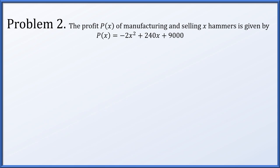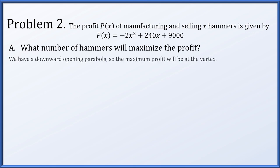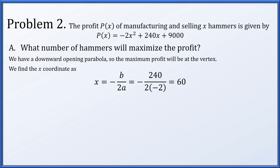Problem 2. The profit p(x) of manufacturing and selling x hammers is given by p(x) = -2x² + 240x + 9000. What number of hammers will maximize the profit? We have a downward opening parabola — a quadratic with negative leading coefficient — which achieves its maximum at the vertex. We find the x-coordinate of the vertex as -b over 2a, or -240 over 2 times -2, which simplifies to 60. So 60 hammers will maximize the profit.